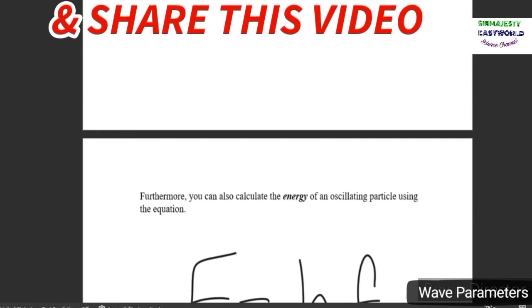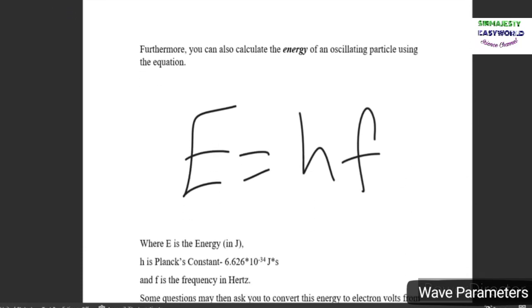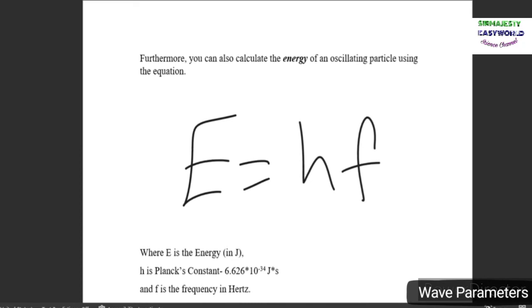Sometimes you may be asked to calculate the energy of the oscillating particle. This is an equation you can use to calculate the energy. If you're given the frequency, all you need to do to find the energy is to multiply the frequency by Planck's constant. Planck's constant is 6.626 times 10 to the negative 34 joule seconds. Usually you don't have to memorize this because it's often given in the question if required. This is the basic equation, E equals hf.